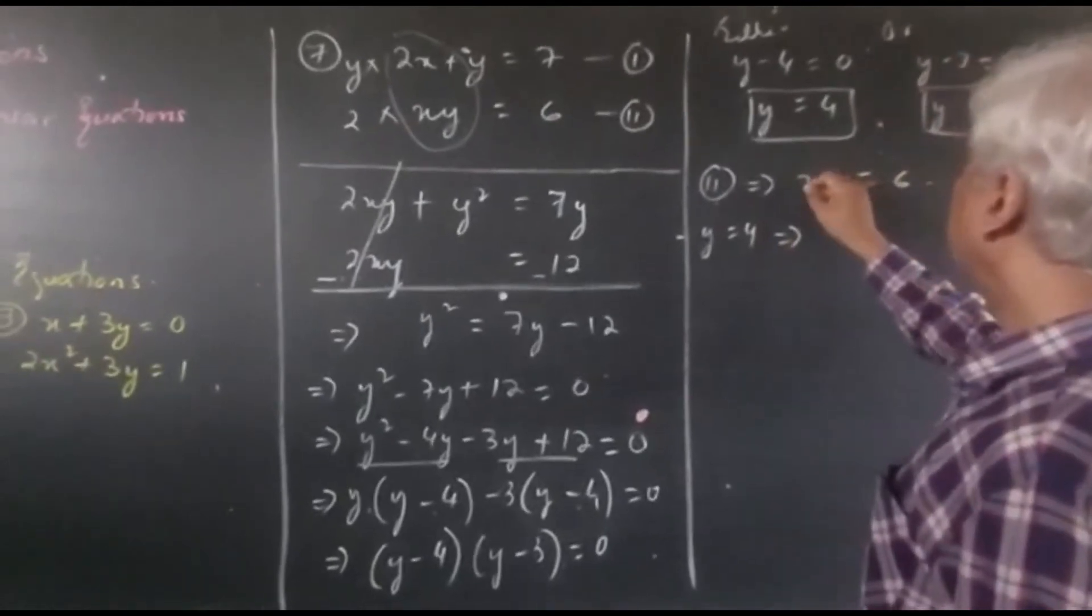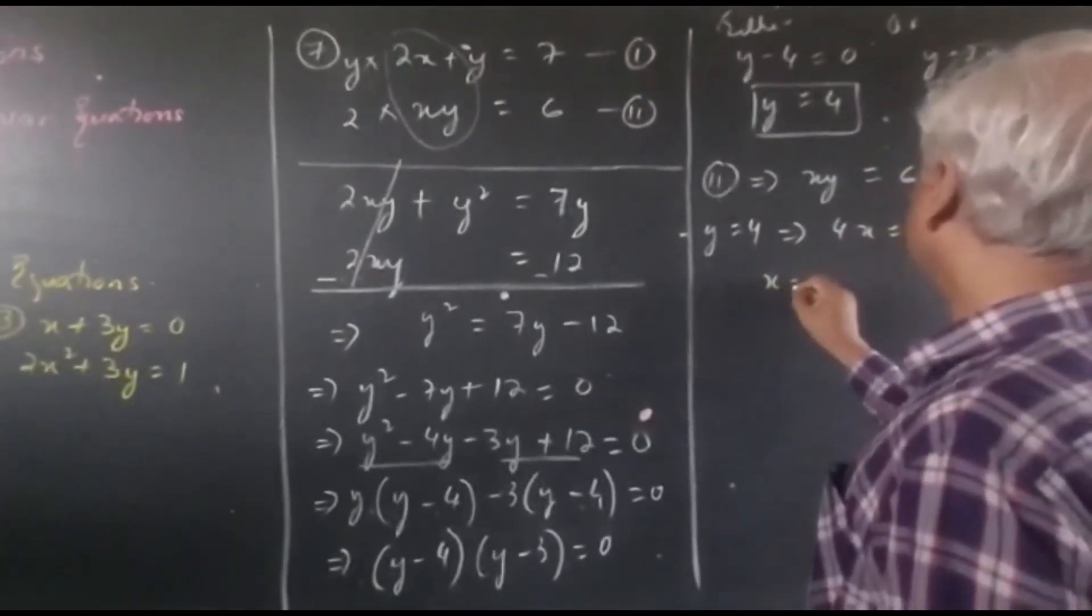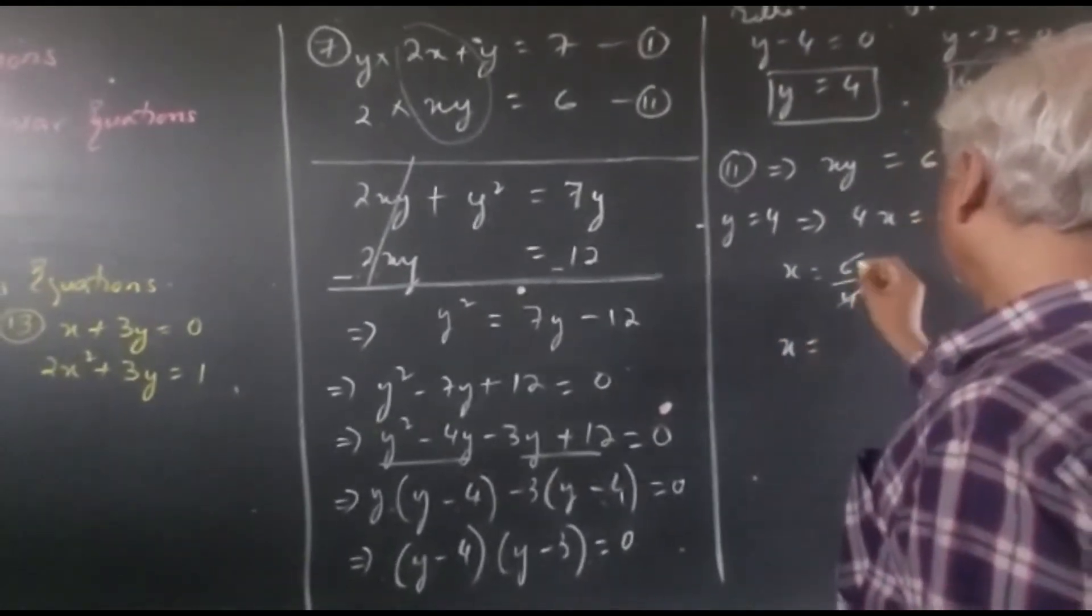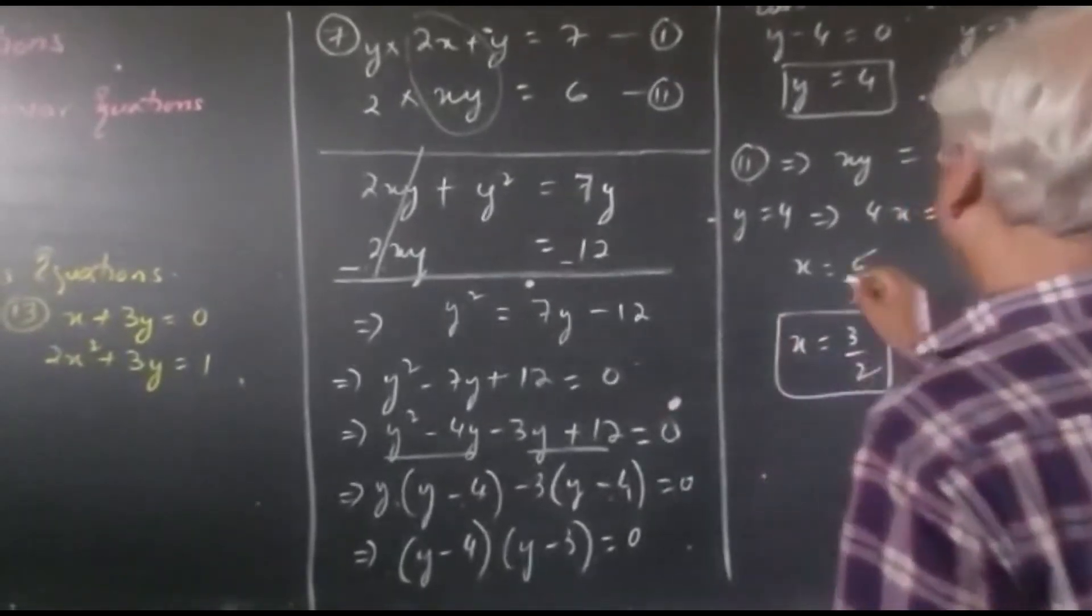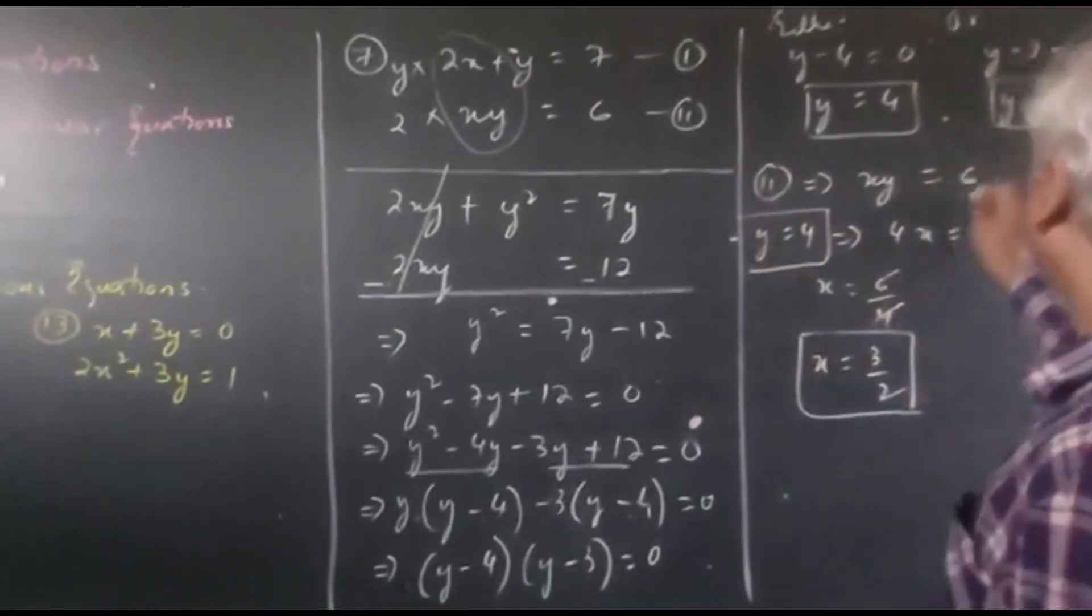So if you take 4, this will become 4x equals 6, or in other words, x equals 6 upon 4. So cancel out, 3, 2. So we have x equals 3 upon 2 and y equals 4.